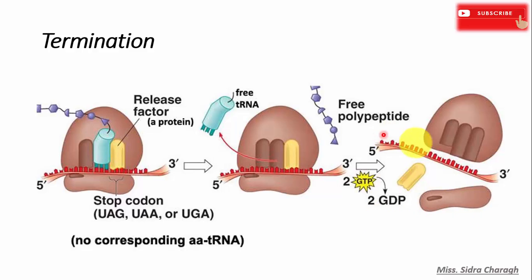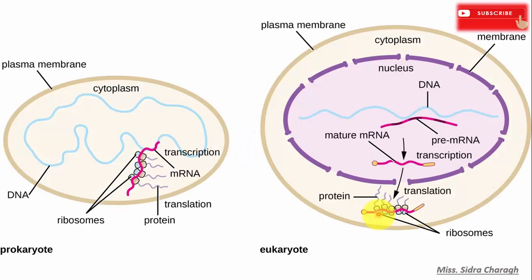These components are then ready to be used again in the next translation process. In prokaryotes, transcription and translation occur continuously in the cytoplasm, but in eukaryotic cells, transcription is localized in the nucleus and translation takes place in the cytoplasm.